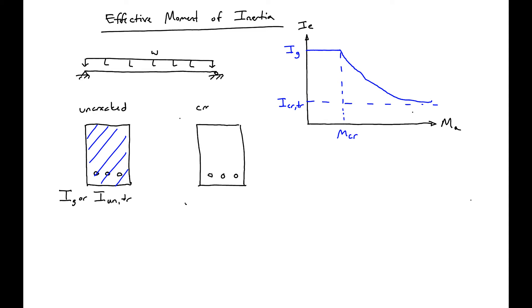After our section is cracked, we will only take into account the concrete that's still in compression. This is going to contribute to our stiffness. Then we will transform our steel into some equivalent concrete area. How much concrete would we need at that section to represent the amount of steel that's there?